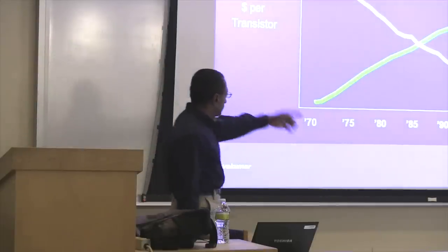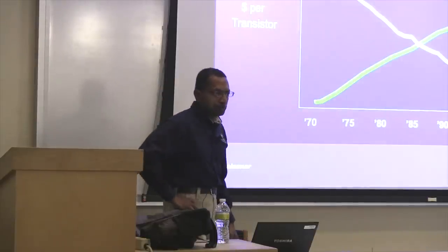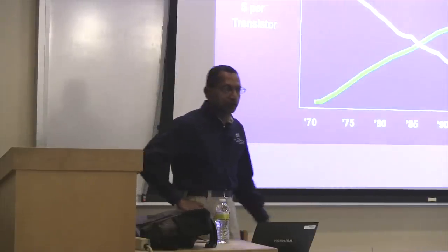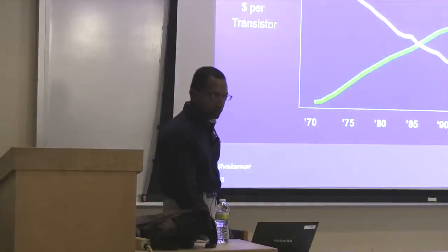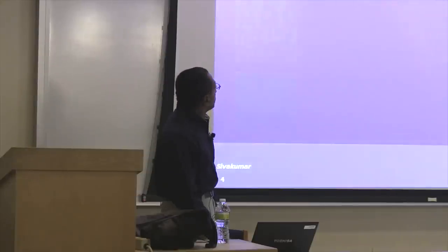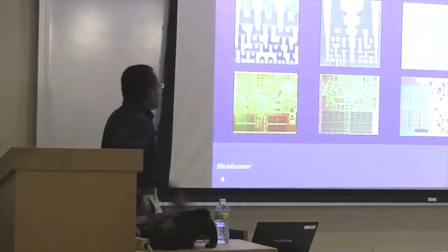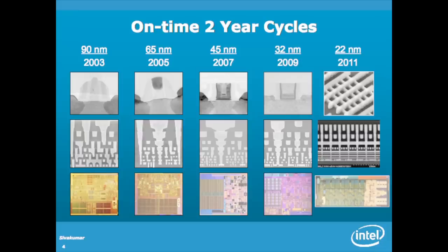Lithography is really the engine that drives Moore's Law, enabling us to make feature sizes smaller and smaller. The economic benefit is that you're able to provide much more capability in a cell phone today than you had in a supercomputer 20 or 30 years ago. But the technical challenge goes up proportionally — it's really hard to make these features small. The 22 nanometer technology is what is in the marketplace right now. Starting from 90 nanometers in 2003, every two years roughly we've been trying to get a new process technology out in the market.